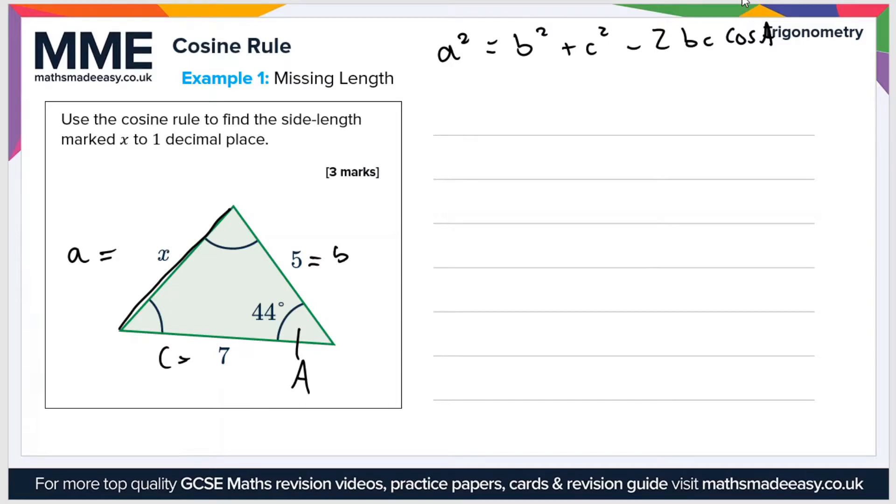Okay so if we substitute in these values then we get that x squared equals, so b is 5, so 5 squared and c is 7 plus 7 squared minus 2 times and then b and c are 5 and 7 respectively.